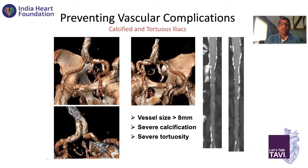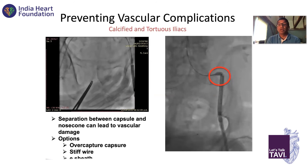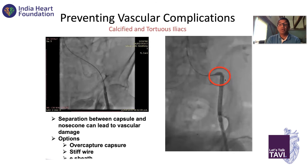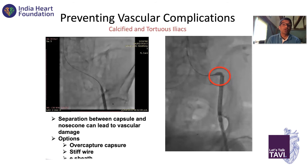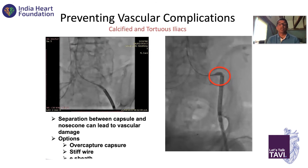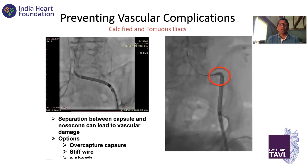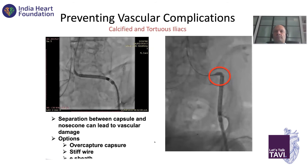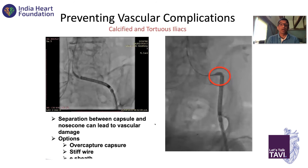The other issue is calcium and tortuosity in the iliac. With severe tortuosity and severe calcium, it becomes like a lead pipe and won't straighten. This can happen with an Evolute delivery system if you're not careful — the wire was not stiff enough, and you can see the capsule separating. The scenarios here: if vessel size is big enough, you can put an 18 French sheath and deliver everything through it to avoid this issue. Or you over-capture the capsule — clockwise it — making it stiffer at the tip, or put a stiffer wire. You have to be careful and watch on fluoro; never push without watching on fluoro.